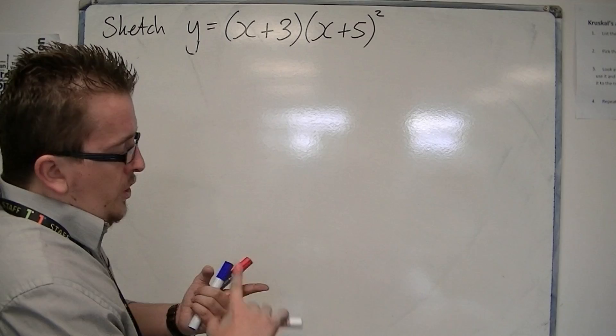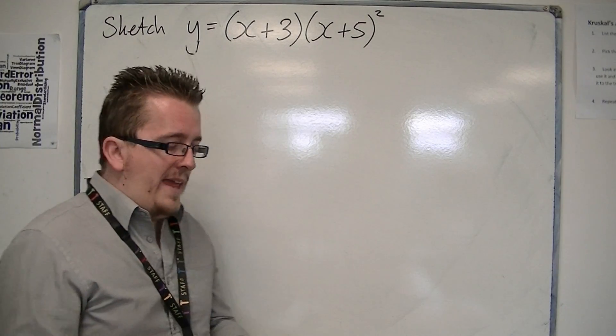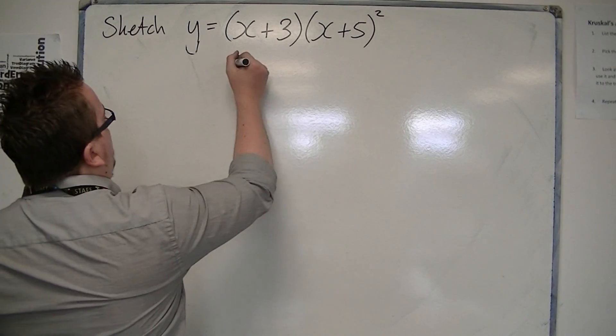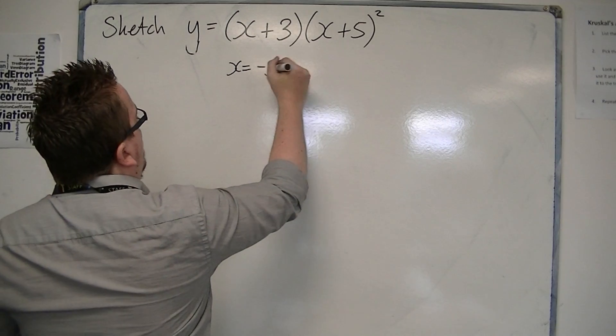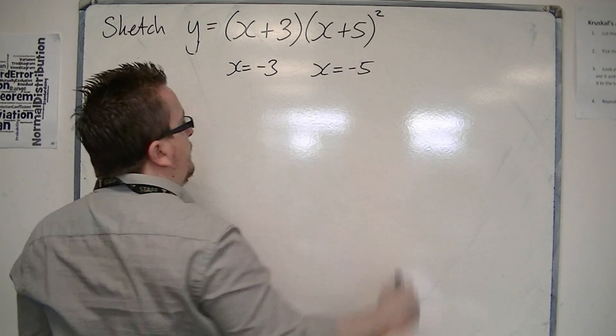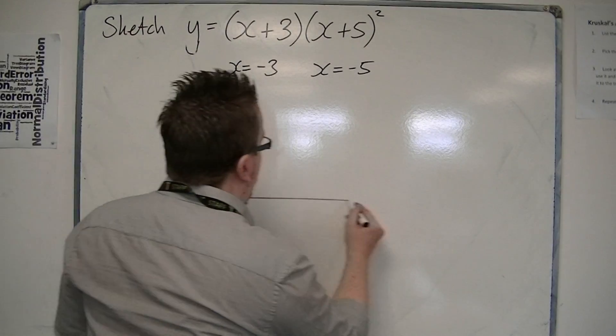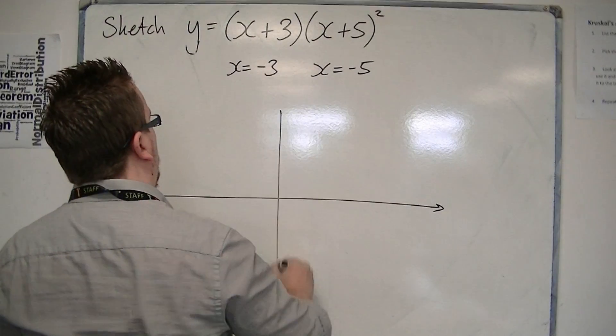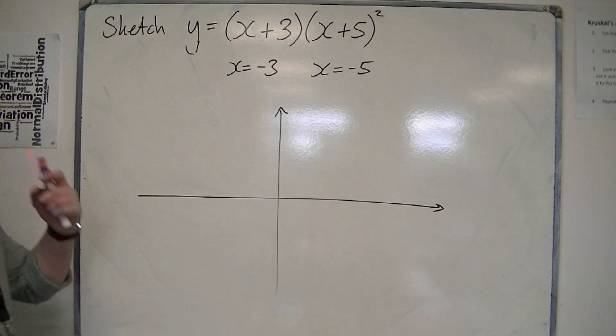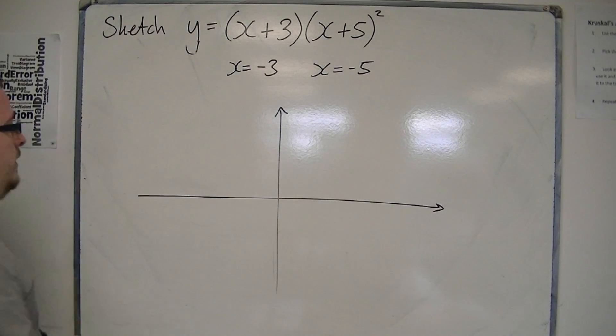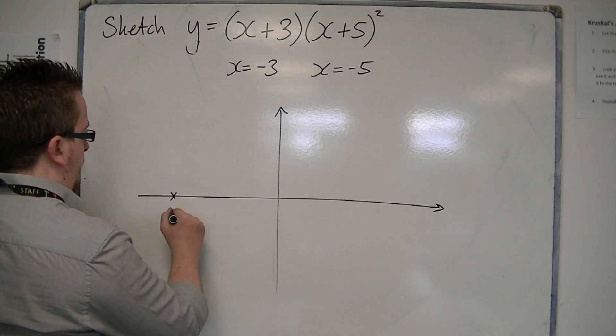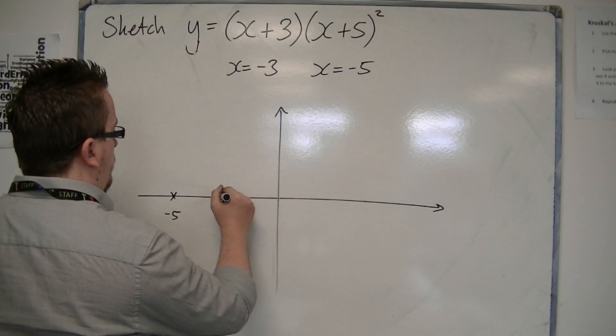The cubic will cross the x-axis when x is minus 3, or when x is minus 5. So we only have two points where the cubic crosses the x-axis. We've got minus 5, and we've got minus 3.